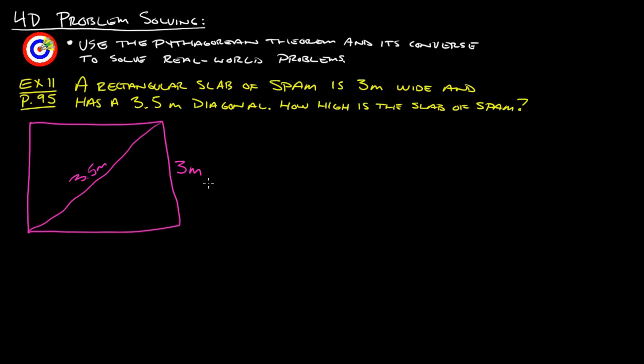How high is the slab of Spam? Let's see, if we're going to go 3 meters wide, let's put our 3 meters over here. Then we're trying to figure out what this is here. Since it says it's rectangular, we know that all these angles are right angles. And for what we need, we want this angle here to be a right angle. With that, let's just use our Pythagorean theorem to see what we get for this last side here.